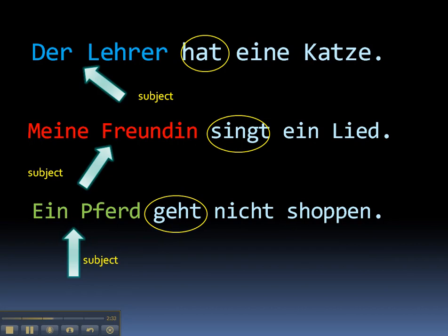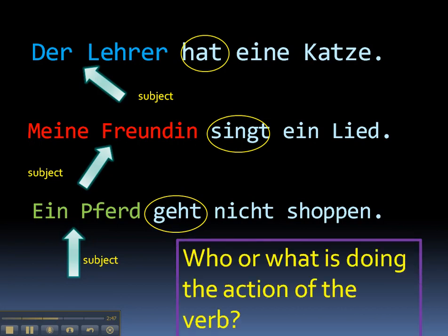In each of these examples, the subject is first in the sentence. Now of course, German sentences are more complex than this, as they are in English. So let's have a look at what happens and how we can keep identifying the subject in more complex sentences. And don't forget — that's always the question: who or what is doing the action of the verb?